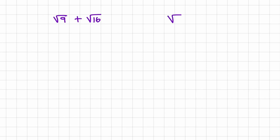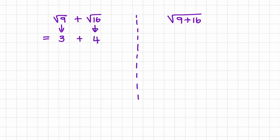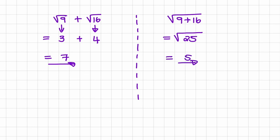Let's compare that answer to the square root of 9 plus the square root of 16. In a previous video, we learned how to find the square root of a value. The square root of 9 is equal to 3 and the square root of 16 is equal to 4. So 3 plus 4 is equal to 7. But if I take the square root of 9 plus 16, inside of the square root, I can first add up these two values. So 9 plus 16 is 25.